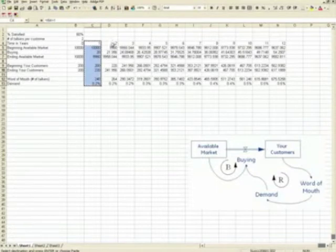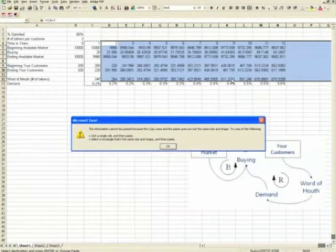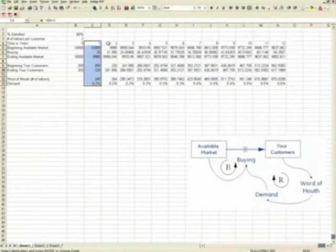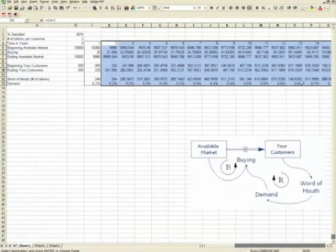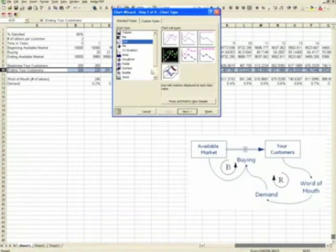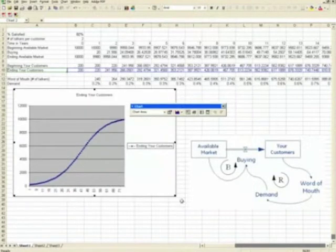Now that the model is basically done, let's copy this out for 50 periods. That's our model. Then we will take ending customers, something we're interested in, and we will graph it. And there you have it. That is an S curve.